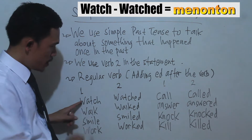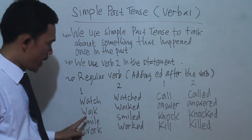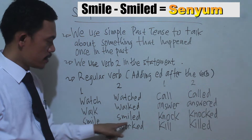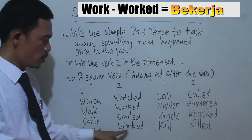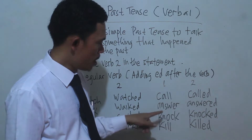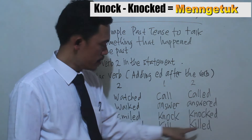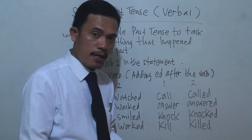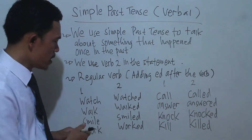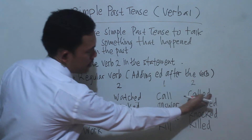Verb 1 is 'watch', so verb 2 becomes 'watched'. Next, 'walk' becomes 'walked', 'smile' becomes 'smiled', 'work' becomes 'worked', 'answer' becomes 'answered', 'knock' becomes 'knocked', 'kill' becomes 'killed'. The difference between verb 1 and verb 2 is that we add "-ed" after the verb. This is the main verb or verb 1, and this is verb 2 we use in simple past tense.